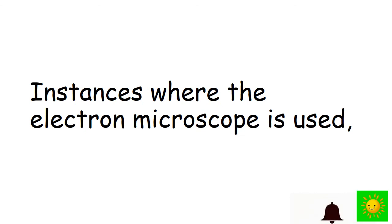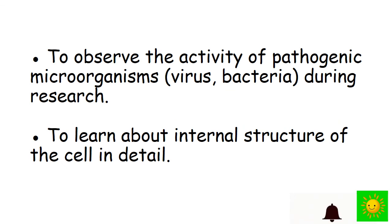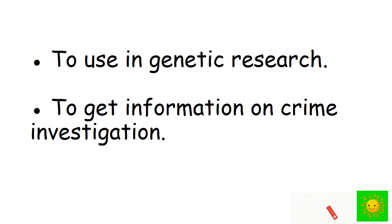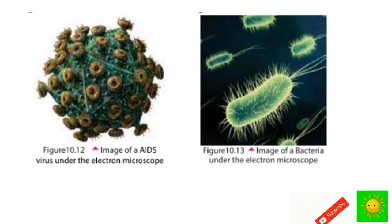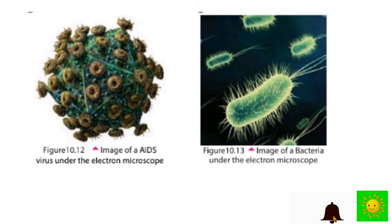Let's see the instances where the electron microscope is used: to observe the activity of pathogenic microorganisms like viruses and bacteria during research; to learn about internal structures of the cell in detail; to use in genetic research; and to get information for crime investigation. You can see an image of the AIDS virus and an image of bacteria, both under the electron microscope.